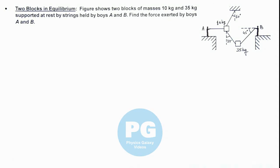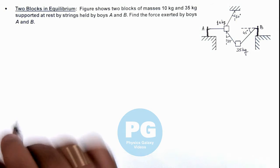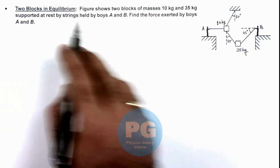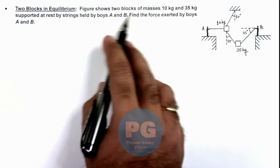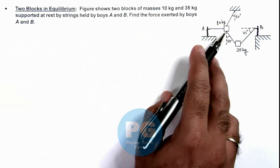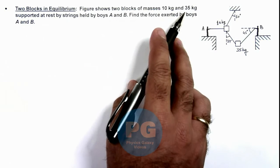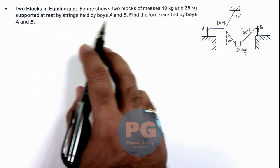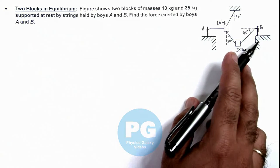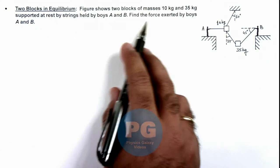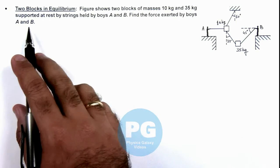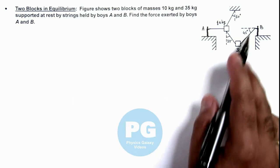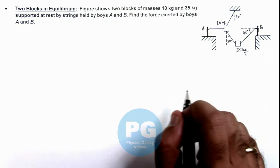This illustration is about the analysis of 2 blocks in equilibrium. The figure shows 2 blocks of masses 10 kg and 35 kg supported at rest by strings held by boys A and B. We are required to find the force exerted by boys A and B via these strings connected to the blocks.